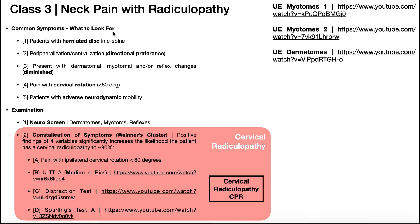Common symptoms to put somebody in class three would be if they had a herniated disc in the c-spine. Now there's no physical exam that you could do to test for a herniated disc. However, you can certainly rule that up with certain presentations, or you might know this from the results of an MRI. A herniated disc may rule up them being in this category.